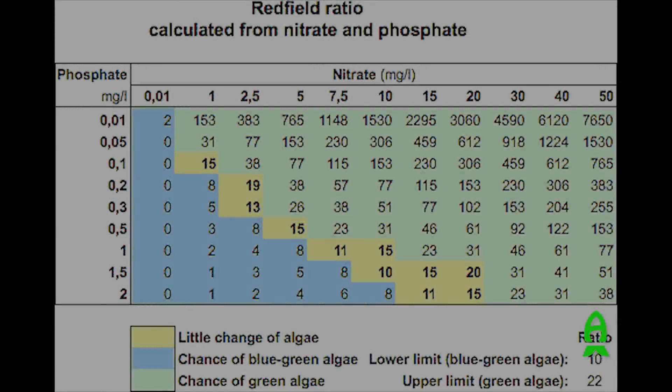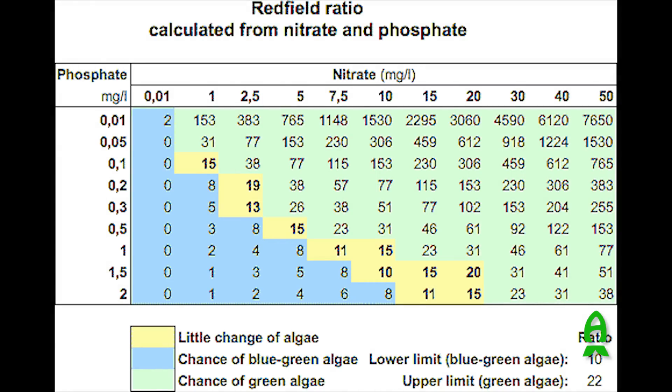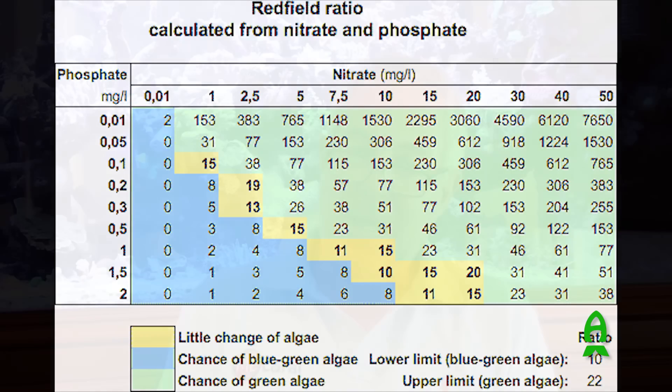Usually in a ratio — the Redfield ratio — where the carbon is about 100 to 110, the nitrates being 15 to 20, and the phosphates only being one. So they need more carbon than nitrates, and more nitrates than phosphates.